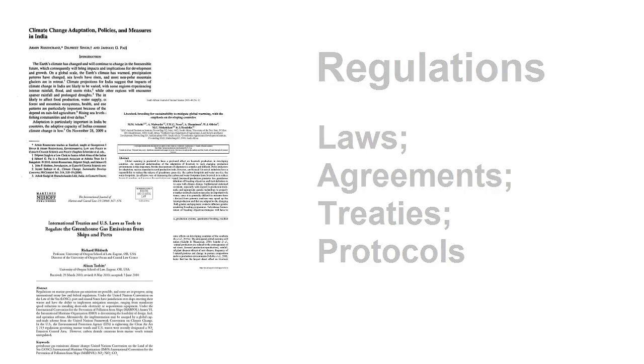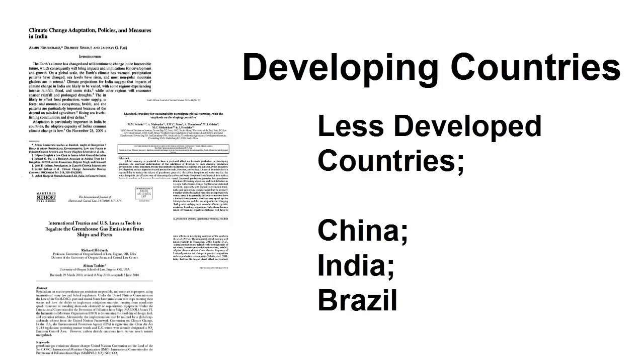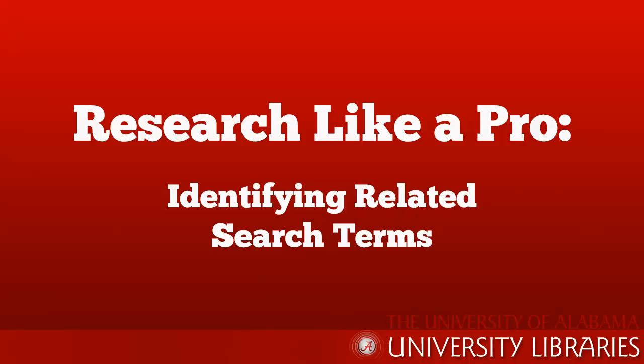Or instead of using the term developing countries, articles might use terms like less developed countries, or specific country names such as China, India, or Brazil. So developing a list of related terms before you start searching can help you grasp the bigger picture of searching and help you surface results that you would not find otherwise.